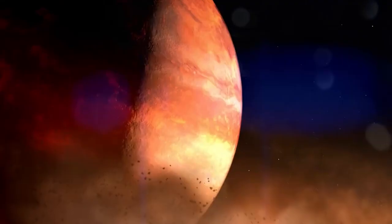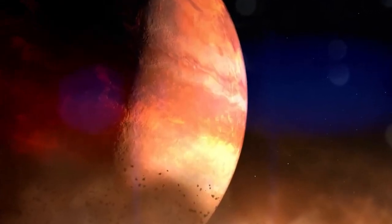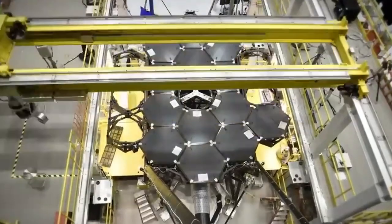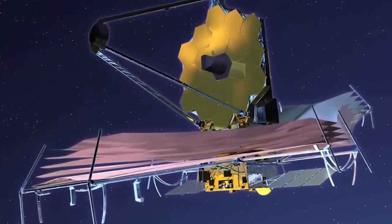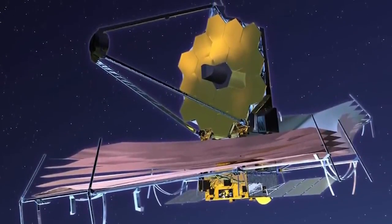Proxima b's orbit around its parent star, Proxima Centauri, is a captivating aspect of its characteristics. Despite the relative proximity to the red dwarf star, this exoplanet exists within the habitable zone, a region where conditions might allow for the presence of liquid water.